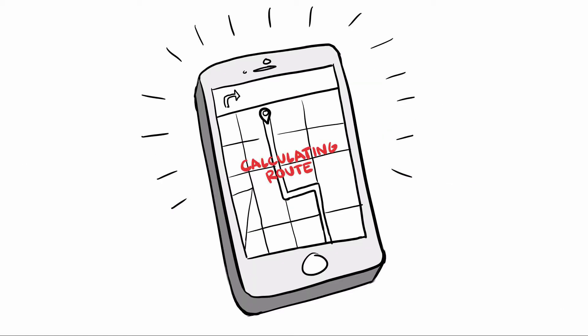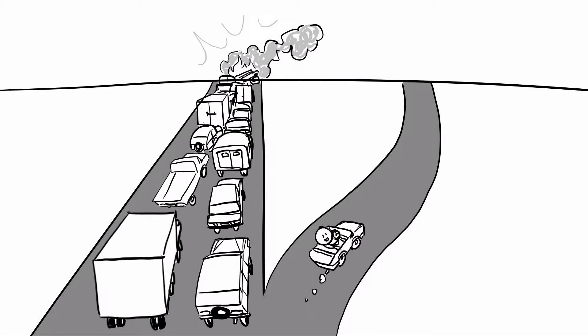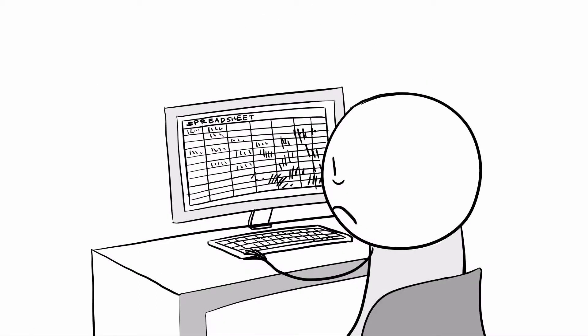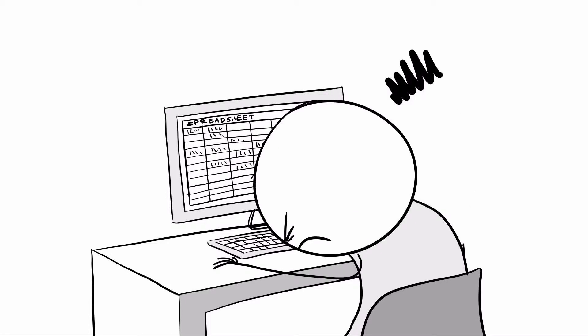Now you just plug your destination into your GPS and go. You navigate around traffic and problems automatically. So is your manufacturing company still using the equivalent of paper maps to schedule production through the plant?